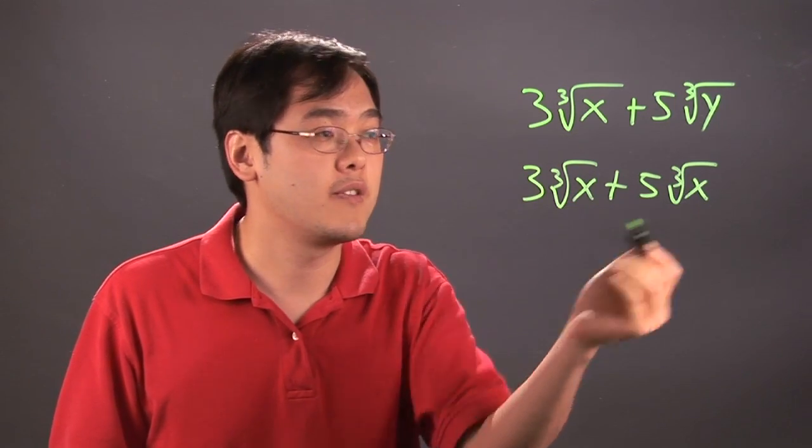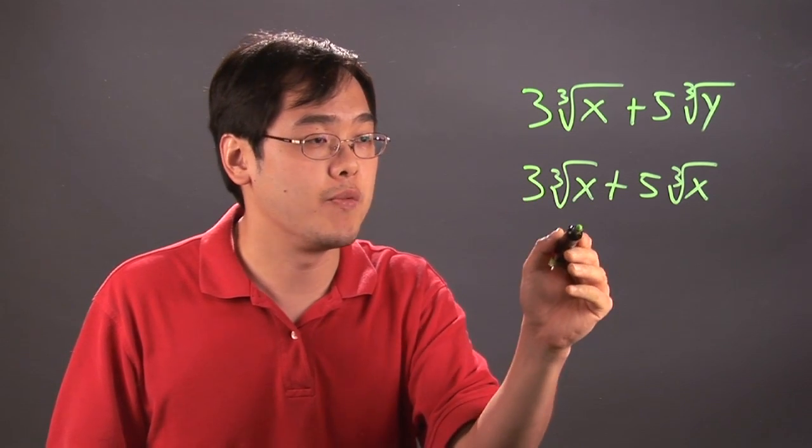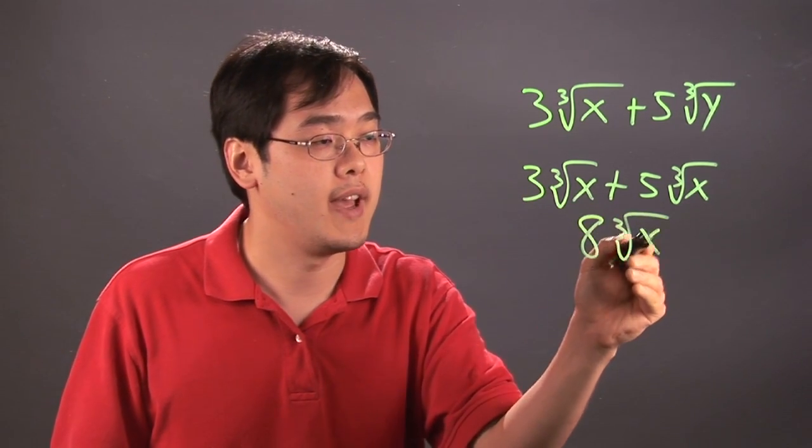It's like 3 tomatoes plus 5 more tomatoes. So 3 cube root of x plus 5 cube root of x is going to give you a grand total of 8 cube root of x.